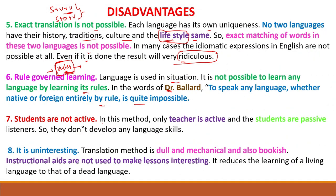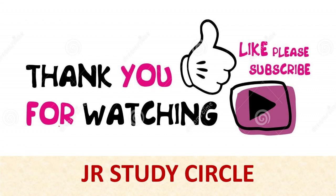Students are not active in this method — only the teacher is active, translating from English to mother tongue, while students are passive learners who do not develop any language skills. It is also uninteresting: the translation method is dull, mechanical, and bookish. Instructional aids are not used to make lessons interesting. It reduces the learning of a living language to that of a dead language. This concludes the discussion on the Grammar Translation Method. Thank you for watching.